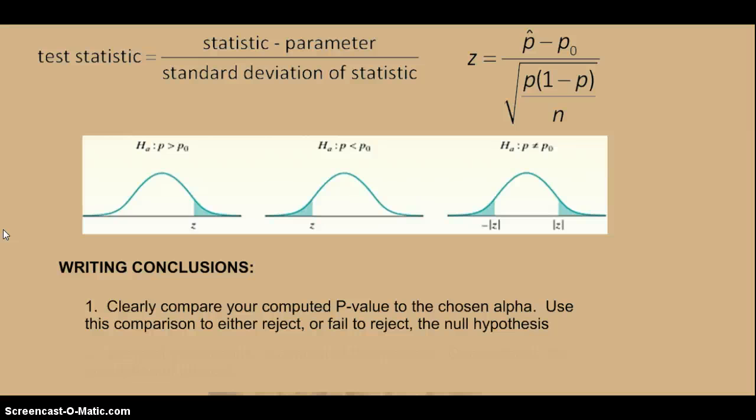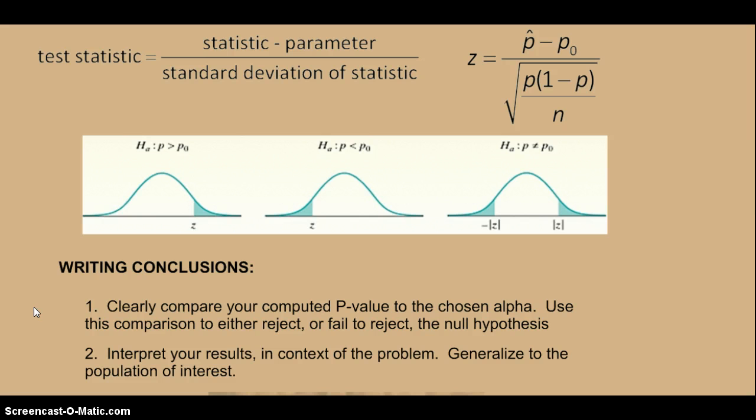We'll use this comparison to either reject or fail to reject the null hypothesis. So the first sentence will be fairly statistical and technical. But the second sentence has to talk about the context. We want to interpret our results in the context of the problem and generalize to the population of interest.